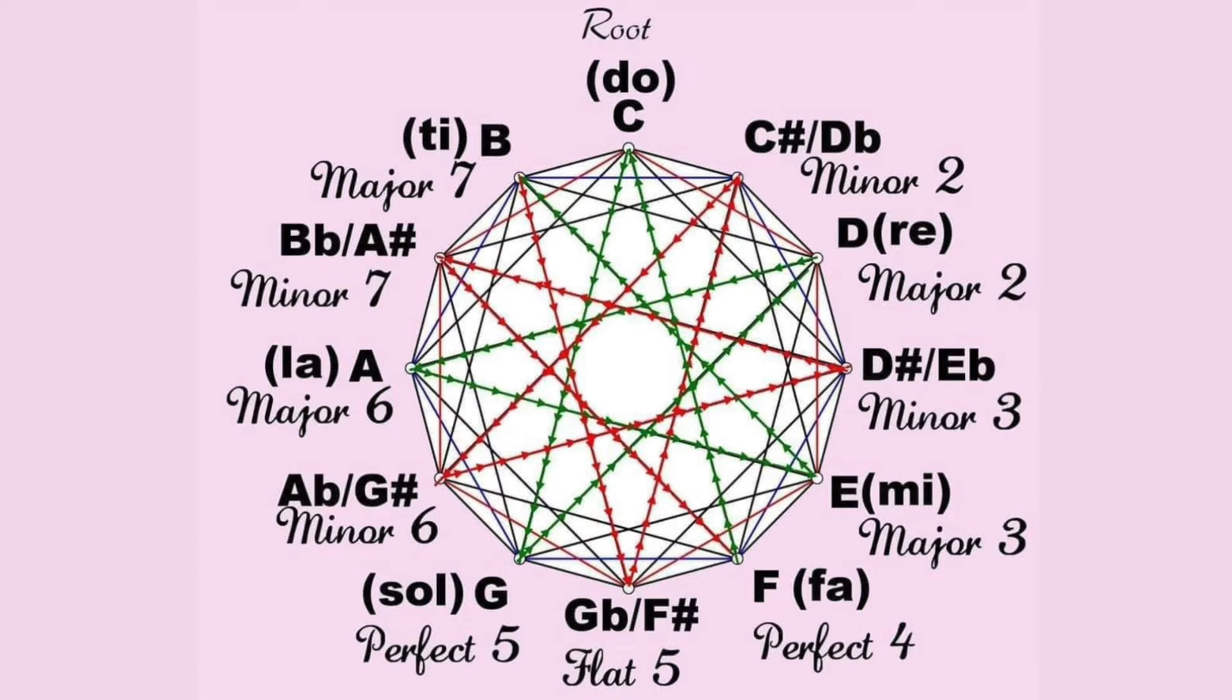A few graphics are circulating in some esoteric groups on social media regarding the geometry of music. This one shows the C chromatic scale, with no source credit information.